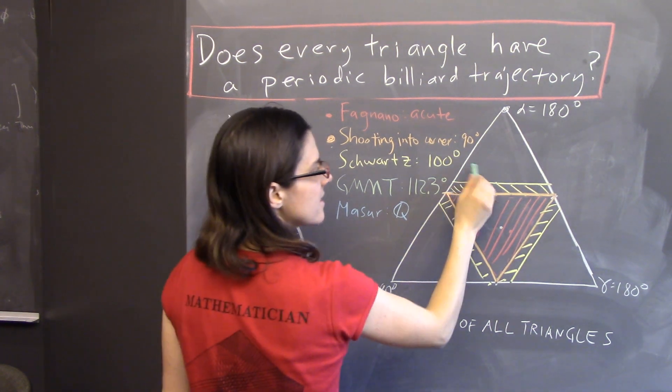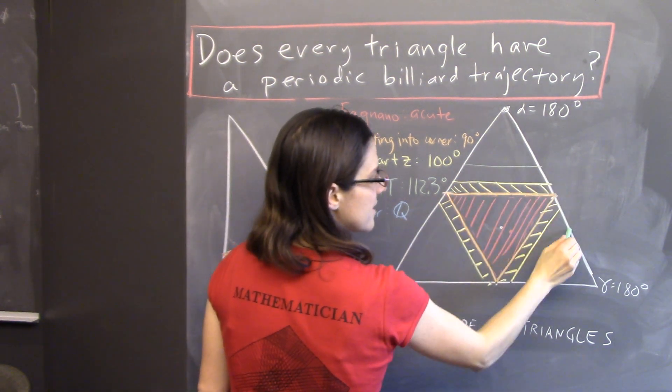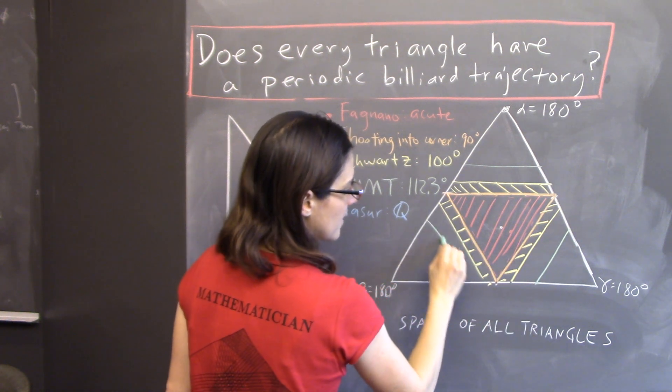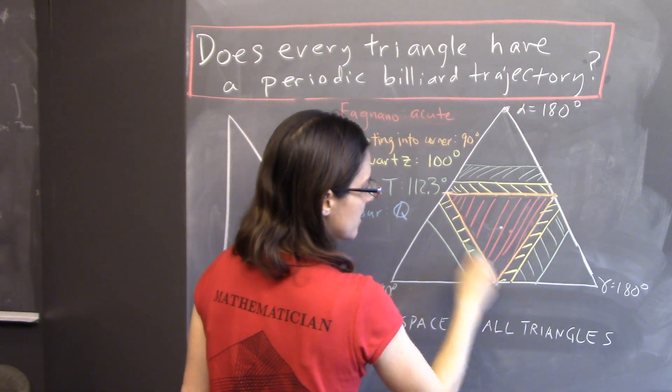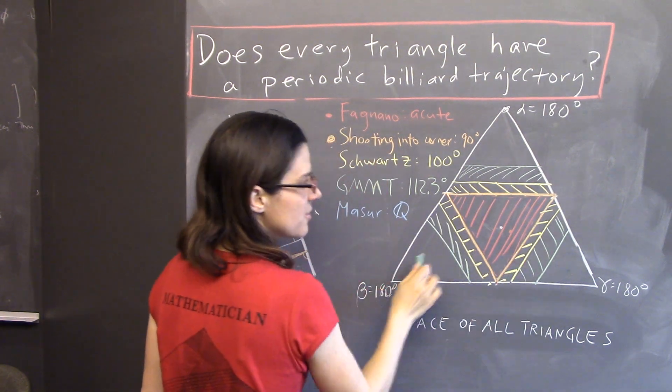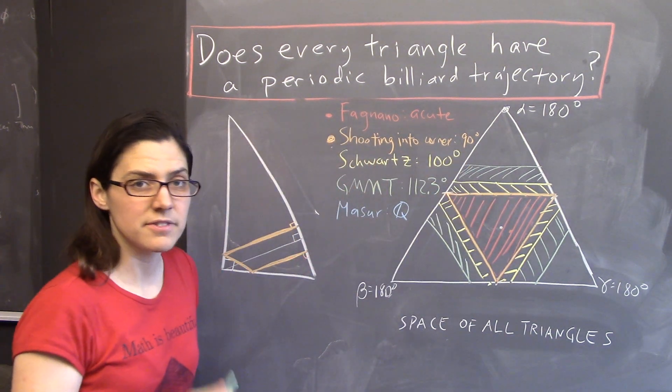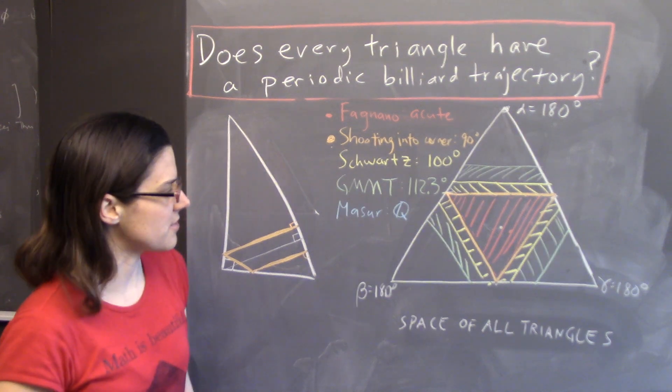So, that extends this a little further into the corners. But as you can see, there's still work to be done. There are these corners where you could prove that a periodic billiard trajectory exists.